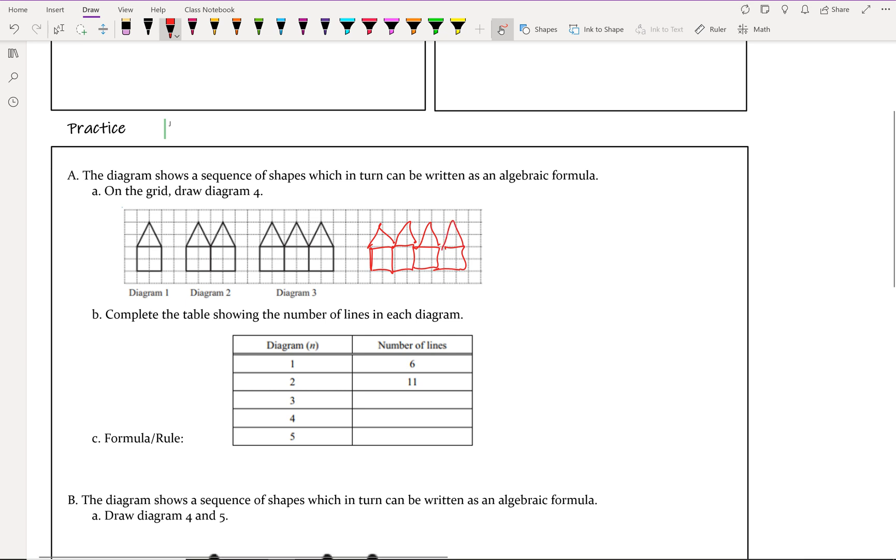In diagram one, we have one. Diagram two, we have two. Diagram three, we have three. And four, I made it four. It looks like it follows that pattern because I did that same pattern to get to the picture.